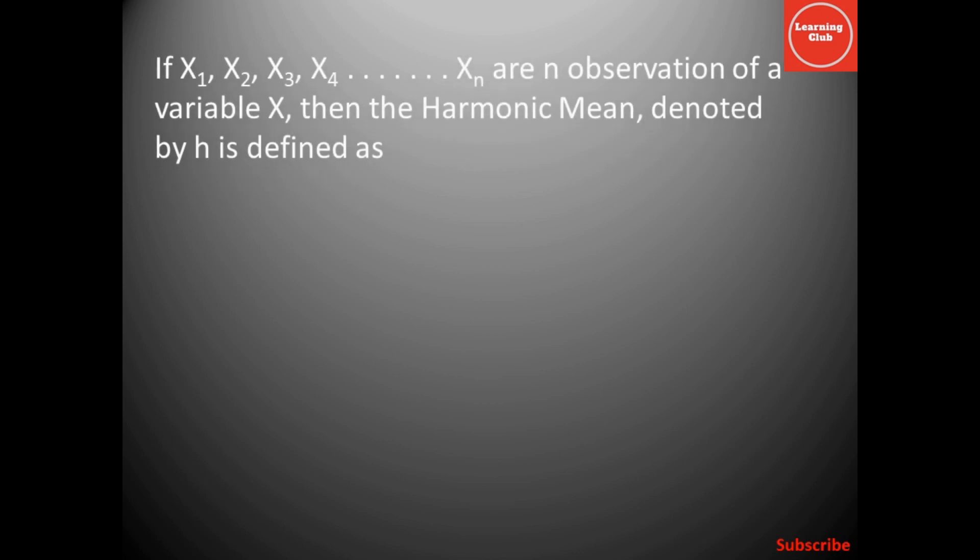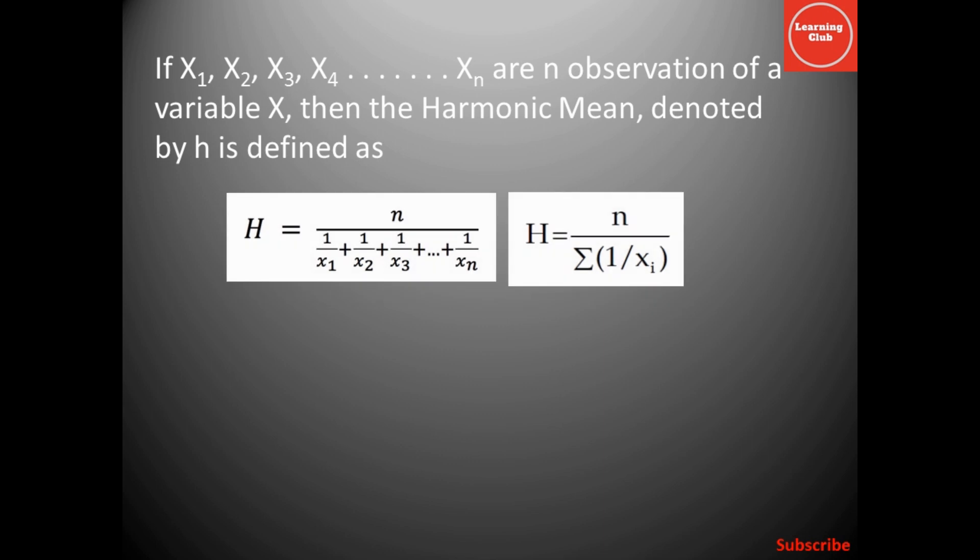If we have x1, x2, x3, x4 up to xn or n observations of variable x, then the harmonic mean denoted by H is defined as H equals n over 1 over x1 plus 1 over x2 plus 1 over x3 up to 1 over xn. In other words, H equals n over summation 1 over xi where i varies from 1 to n. You can see that first we have to take the reciprocal of each value of our variable, then we have to take the sum and then divide that sum by the total number of values.